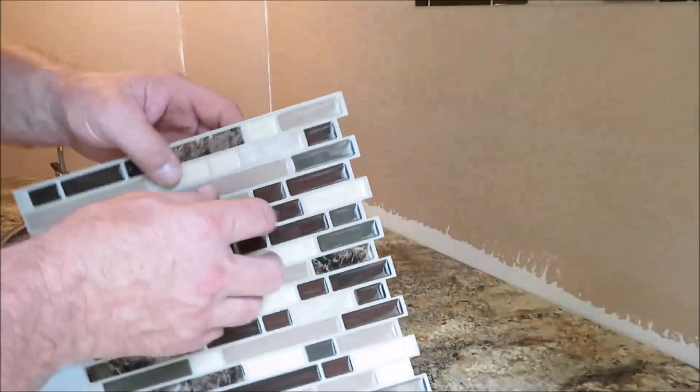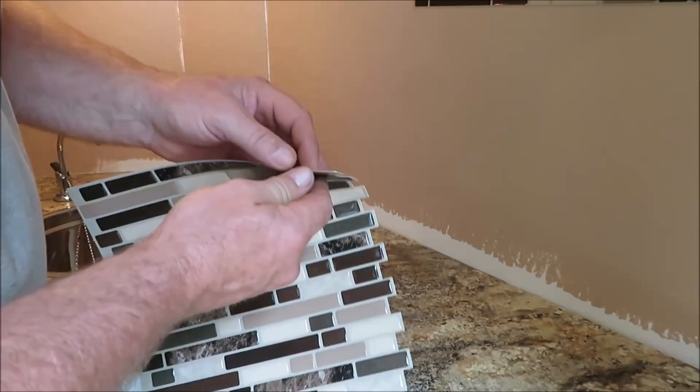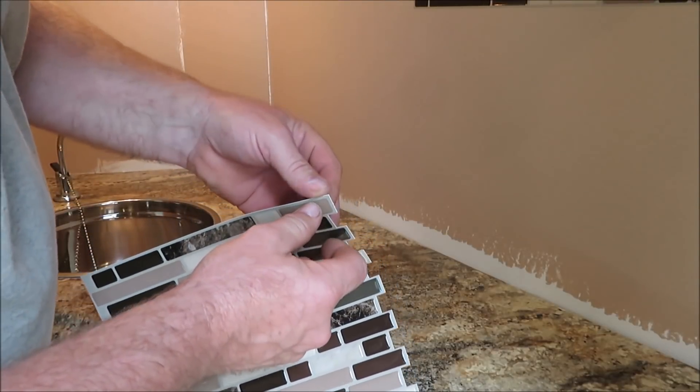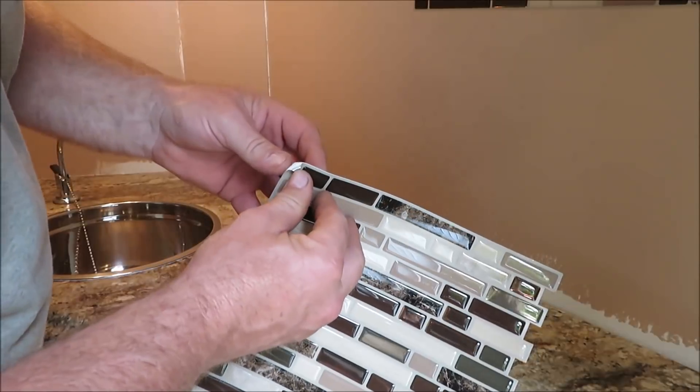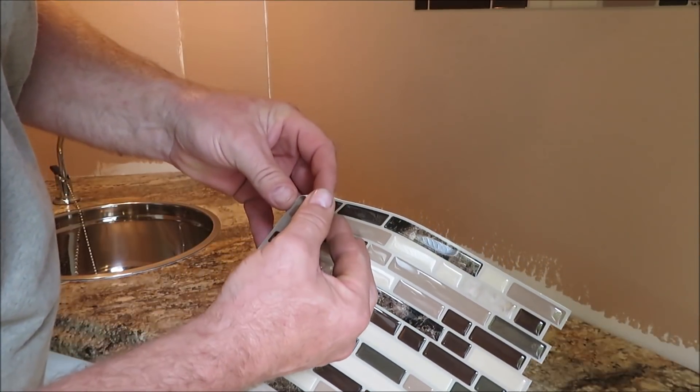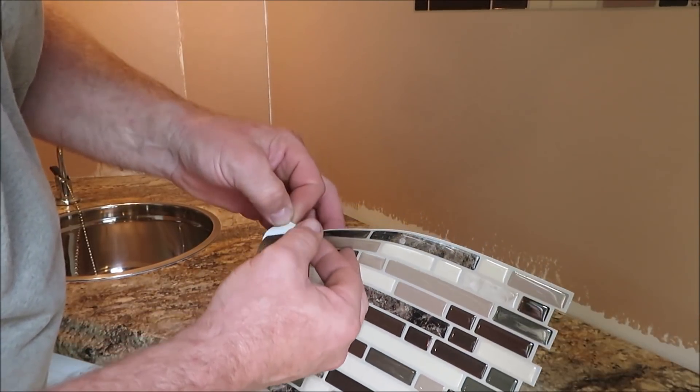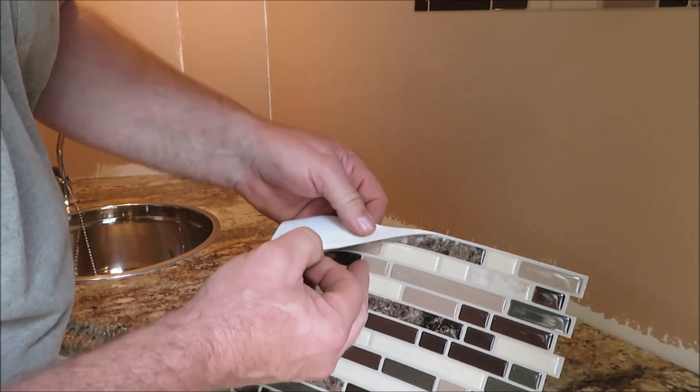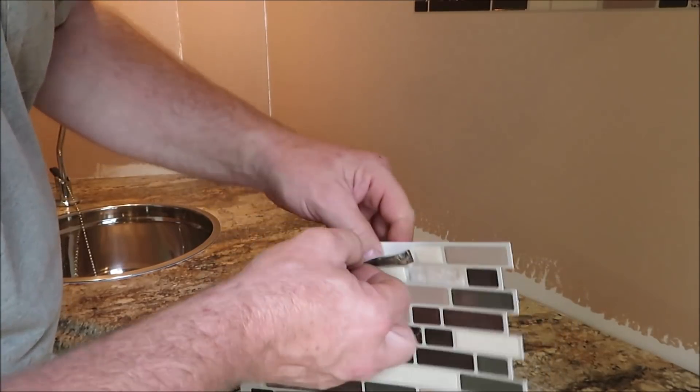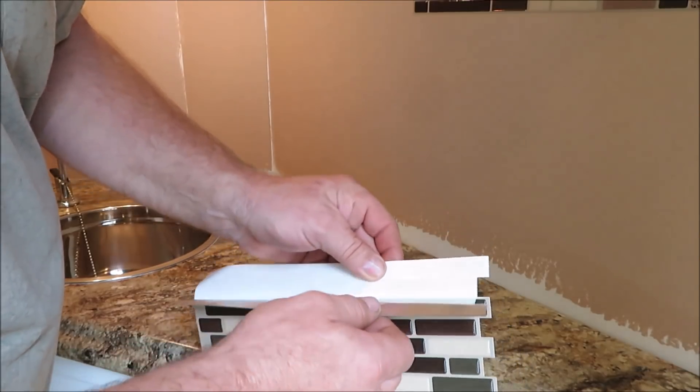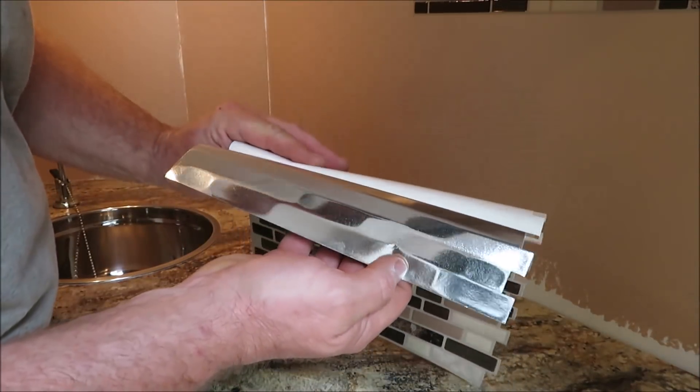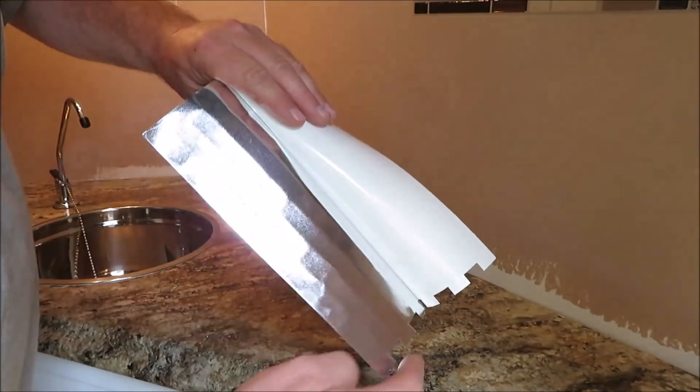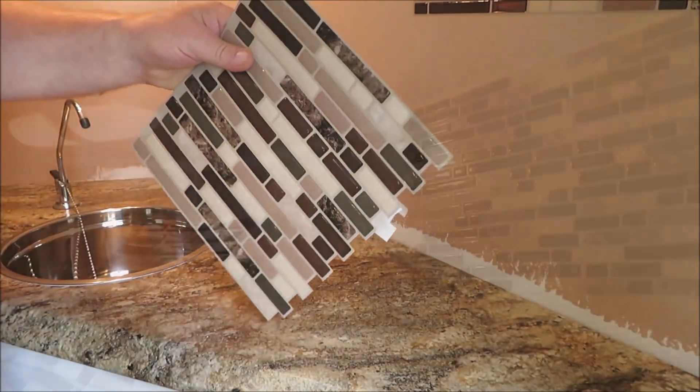All right I'm gonna get one started here to show you guys how this works. You just get one end on the top here and just start peeling your backing off. You don't want to take all the backing off. You're just gonna peel the top side off just like so. So you got it like that, just kind of bend over the piece in the back like that, and then we're gonna stick it up.